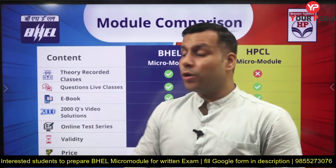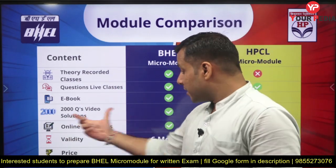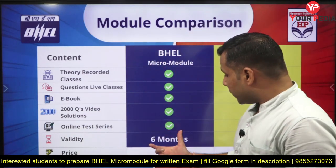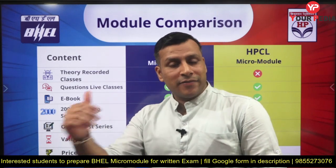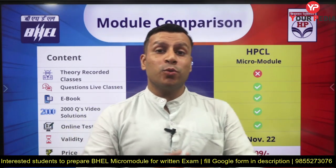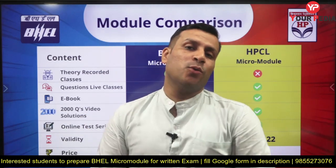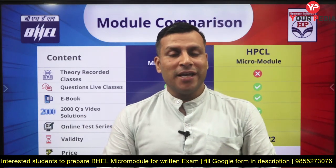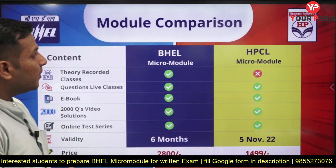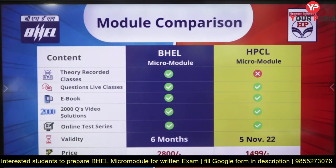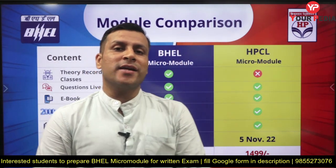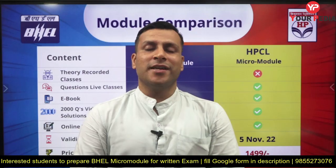In one month it is very difficult to cover all recorded lectures and the 2000-series questions, which is why the BHEL module has a six-month validity — so even after appearing in the exam you can access all the theory and previous year questions. I hope the difference between the BHEL micro module and HPCL micro module is clear. For any further queries, shoot your question in the comment section. Thank you, have a nice day, good luck!